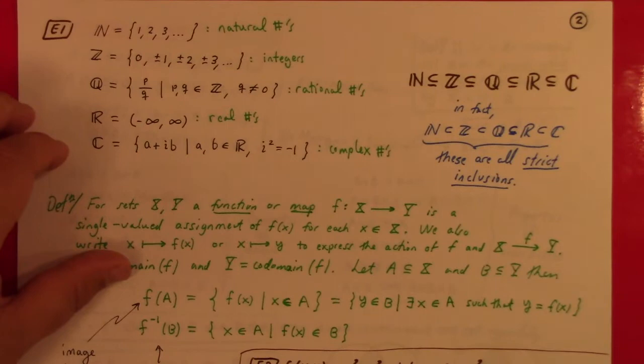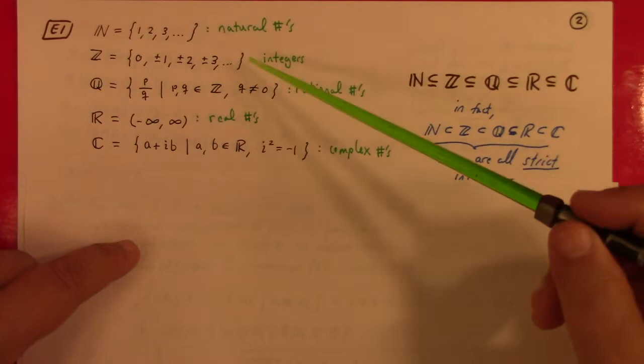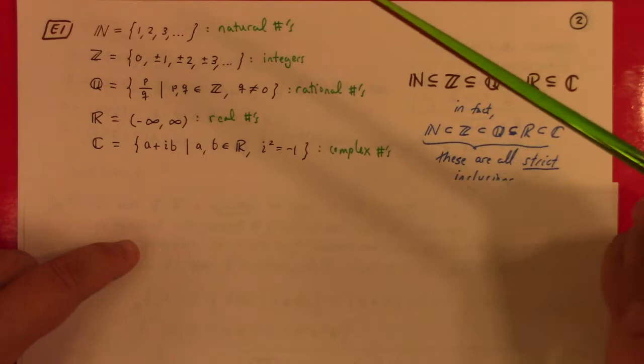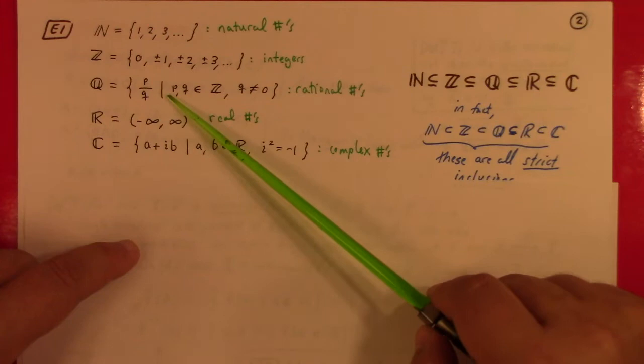Example one is mostly just to introduce notation. My natural numbers start at one — sorry to those who like to start at zero, that's just the way I was taught. The integers, of course, are zero, plus or minus one, plus or minus two, plus or minus three, and so forth.